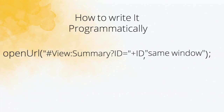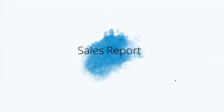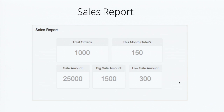Now we are done with the complete view from the customer's point. From Richard's point, as the owner, he has to keep track of his sales report so that he can improve his product. The final part we are going to see is the sales report. These are the details Richard expects in a business sales report — first is the total orders, next is the monthly orders, the sales amount, the big sale amount, and the low sale amount.